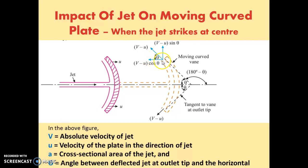Theta is the angle between the deflected jet at the outlet tip and the horizontal. The angle between these two directions is known as theta.